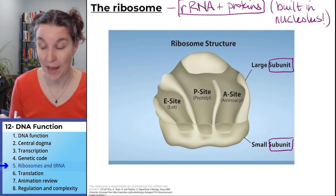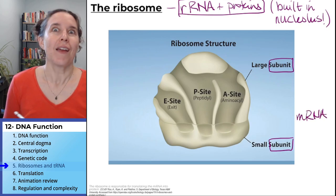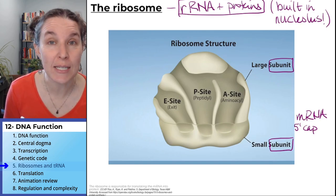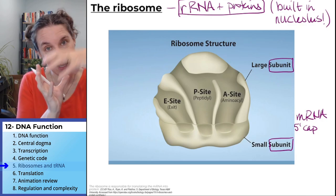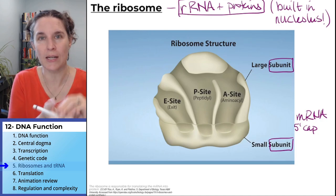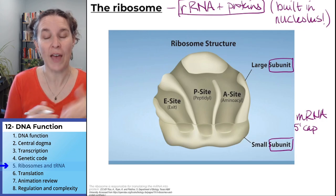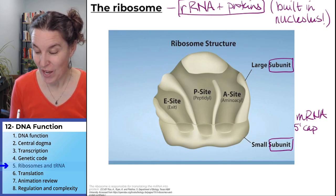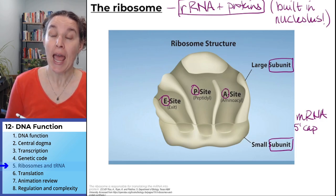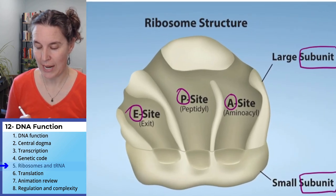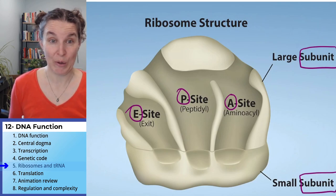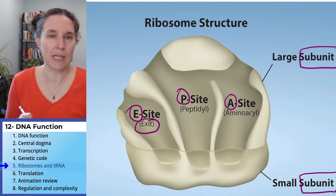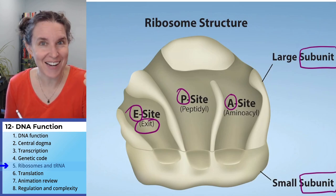The two subunits don't come together until you have a messenger RNA molecule with its 5' cap. Once the ribosome connects — its big subunit and its little subunit — the ribosome itself has three binding sites for tRNA molecules: the A site, the P site, and the E site. The E site is easy — they agree with me — it's the exit site. That's the last place the tRNA molecule is going to be before it leaves.